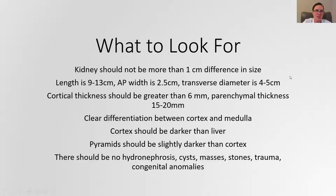You also want to see a clear differentiation between the cortex and the medulla. If you can't see that, it can hint that maybe there's some kind of inflammatory process going on. The cortex should also be darker than the liver — if it's not, that gives you some sense that maybe there's scar tissue or something making the kidney more echogenic than it should be. The pyramids in the kidney should be slightly darker than the cortex, but only slightly. If they're substantially darker, that can actually be indicative of kidney disease like acute tubular necrosis.